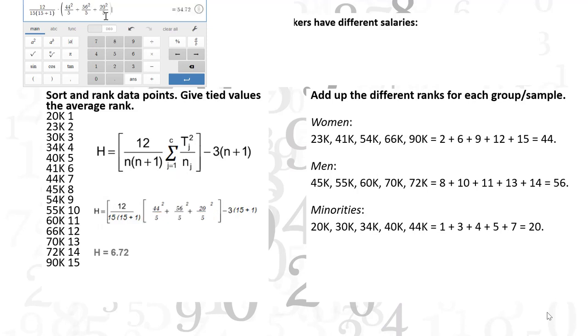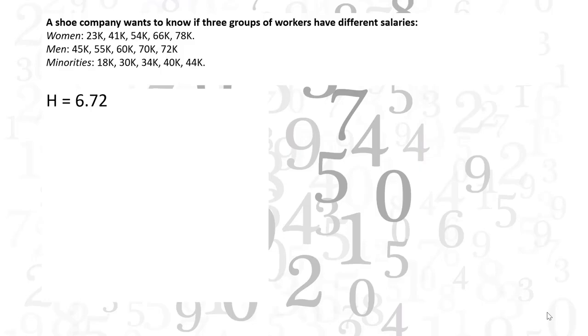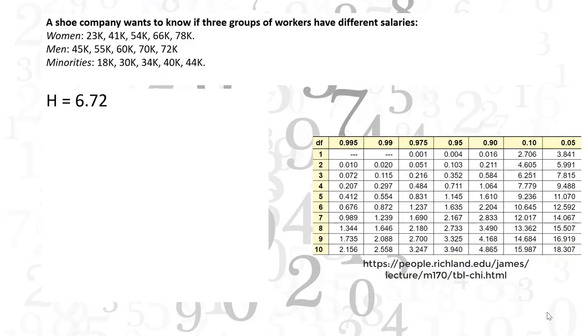We get an H of 6.72. Next, find the critical chi-square value with C minus 1 degrees of freedom.